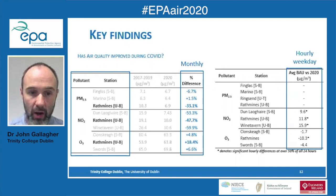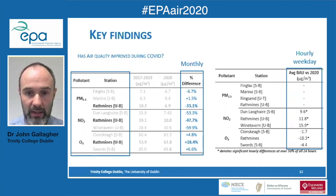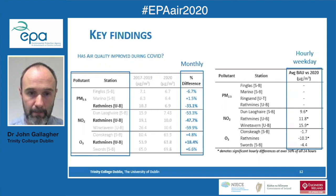From a monthly perspective, Rathmines had a significant reduction for PM2.5 and nitrogen dioxide — 33% and 48% respectively. The urban site was very different for PM2.5 but very similar for NO2. Ozone, once again, showed an increase as opposed to a decrease, and the urban site had a much more substantial increase compared to the suburban sites.